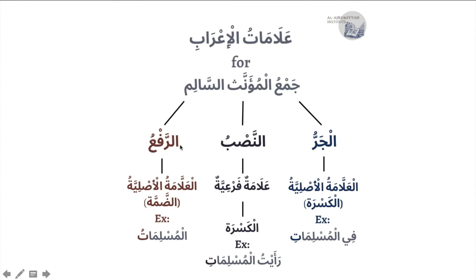When the Jama' Mu'annath Salim is in the position of Raf', it takes the original sign which is the Dhammah: 'al-Muslimatun', 'al-Mudarrisatun', 'al-Samawatun'. When it is Majrur, it also takes the original sign which is the Kasra: 'fil-Muslimati', 'fil-Madrasati', 'fil-Muhandisati'.